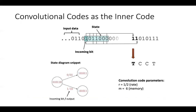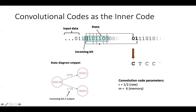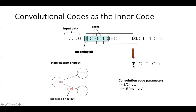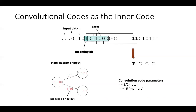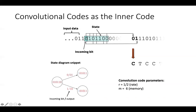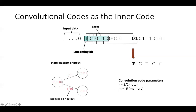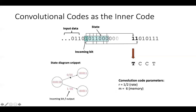We focus on the inner code here and use something called the convolutional code, which consists of a shift register. As the input data goes through the register, the output is generated using a linear combination of the current state. This binary data is then converted into DNA using a simple two-bits-per-base modulation scheme. The sequential structure really matches well with the structure of nanopore sequencing itself, and that is the main reason we use convolutional codes. Every incoming bit leads to two output bits, so the rate is half, and the memory is the number of bits in the state, which is six here. We can also represent this as a state diagram showing that from a given state there are two possible next states.